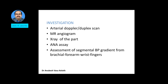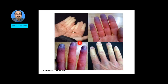Investigations include an arterial Doppler or duplex scan, and further assessment with an MR angiogram or X-ray of the affected part. To rule out collagen vascular diseases, an anti-nuclear antibody assay, ANA profile, or rheumatoid factor can be done. Segmental blood pressure gradient measurement from the brachial, forearm, wrist, and fingers is also possible. On imaging, only the distal portions of the fingers may be involved, showing the characteristic white, blue, then red color changes.